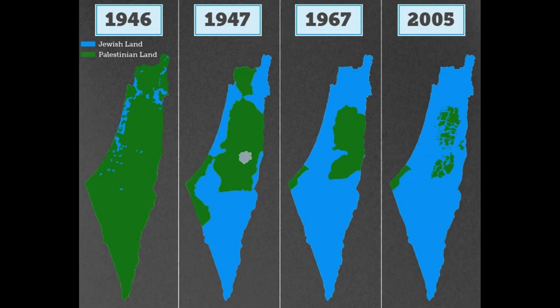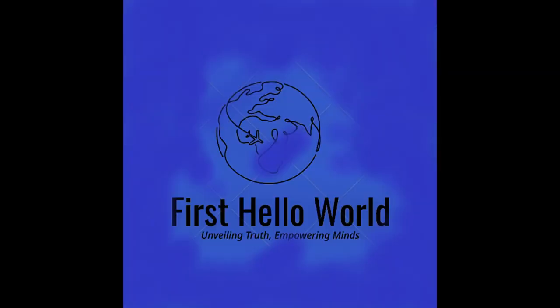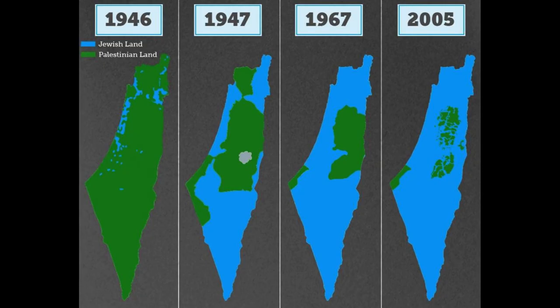In 1939, the British government issued the White Paper, which restricted Jewish immigration to Palestine and limited the amount of land that Jews could purchase. This policy was met with anger by the Zionist movement, which saw it as a betrayal of the Balfour Declaration.